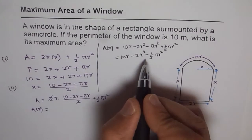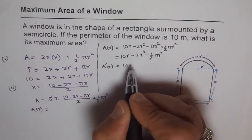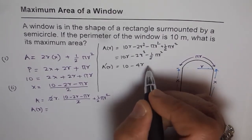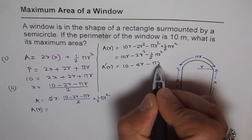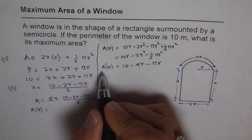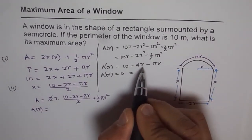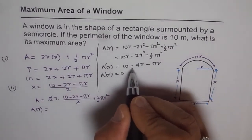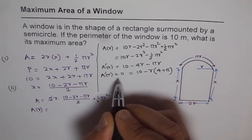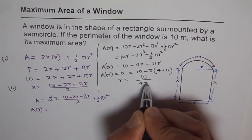The derivative of area with respect to r is A′(r) = 10 − 4r − π r. To find the critical number, we set A′(r) = 0. Factoring out r: 10 − r(4 + π) = 0, which gives r = 10 / (4 + π). That is the radius which will give us the maximum area.